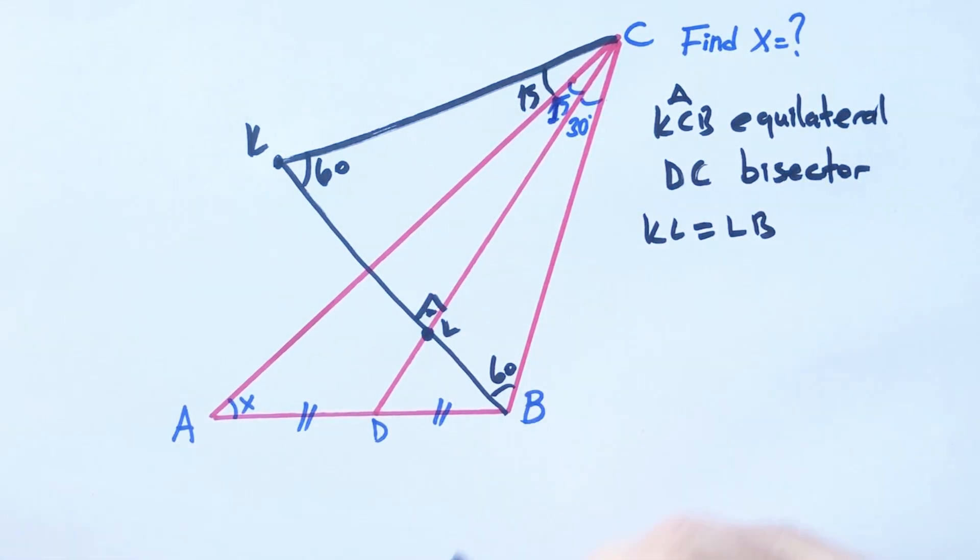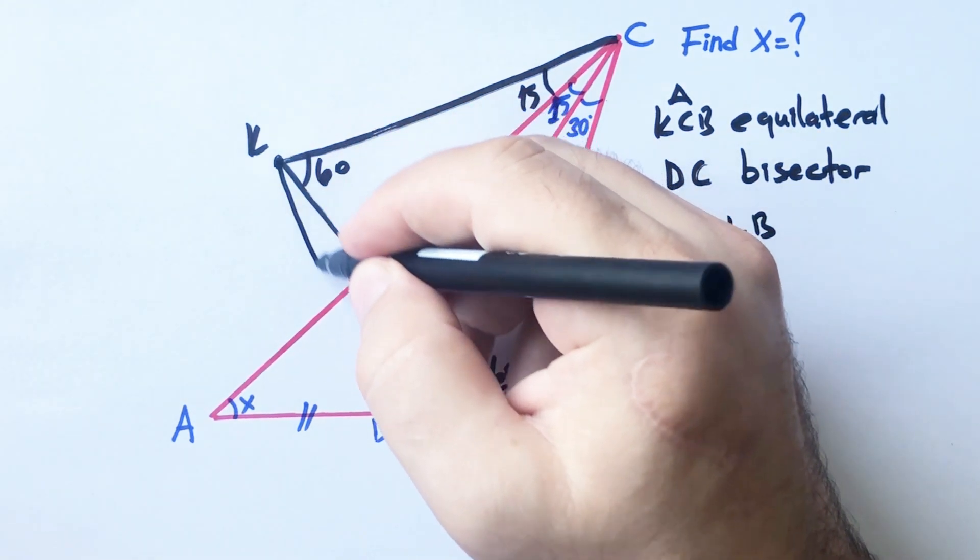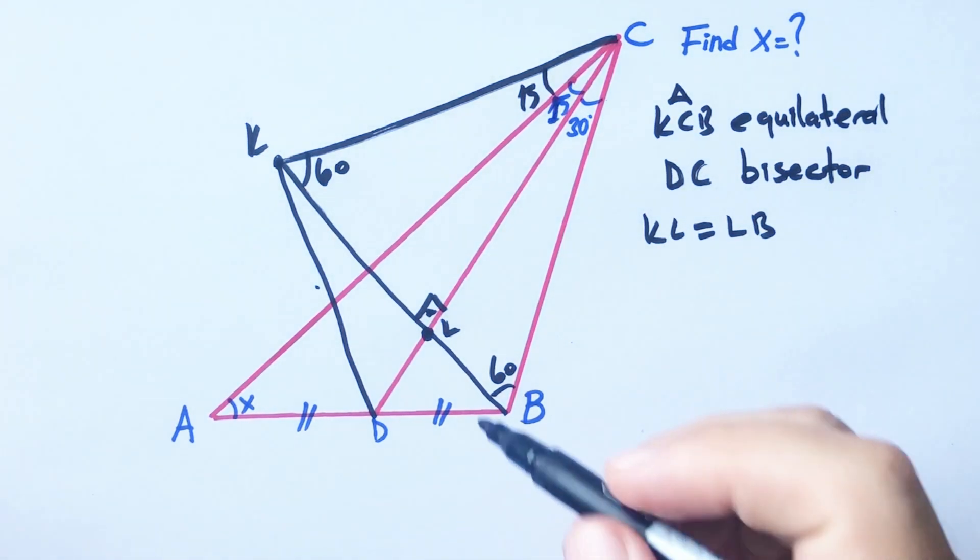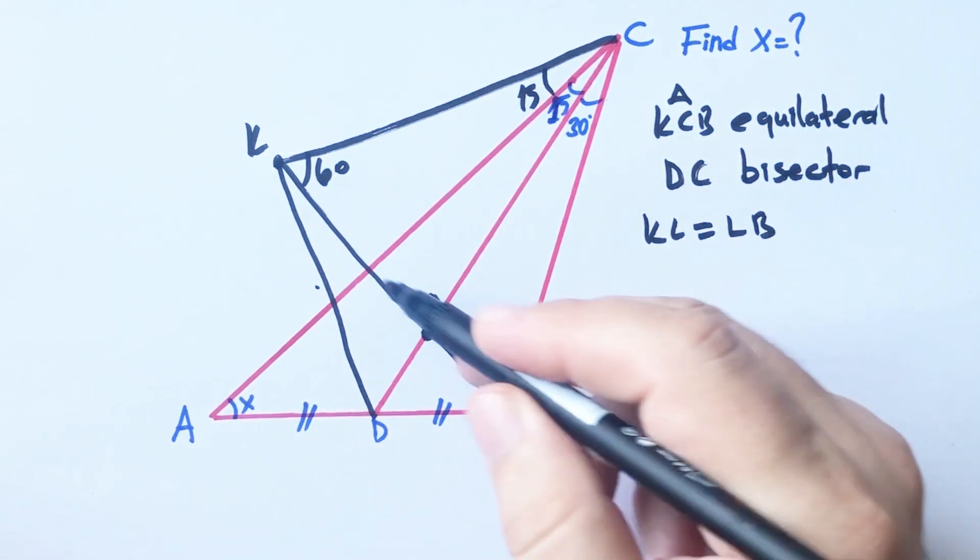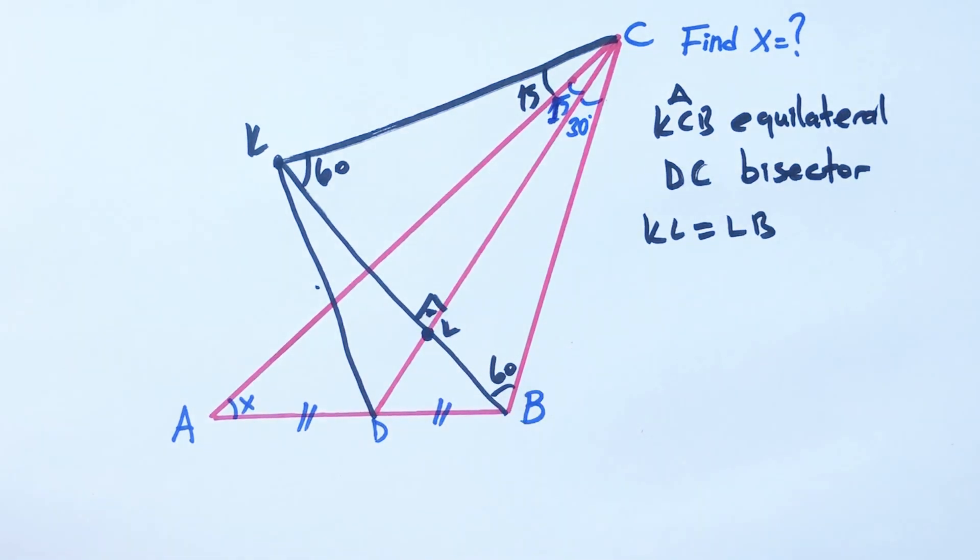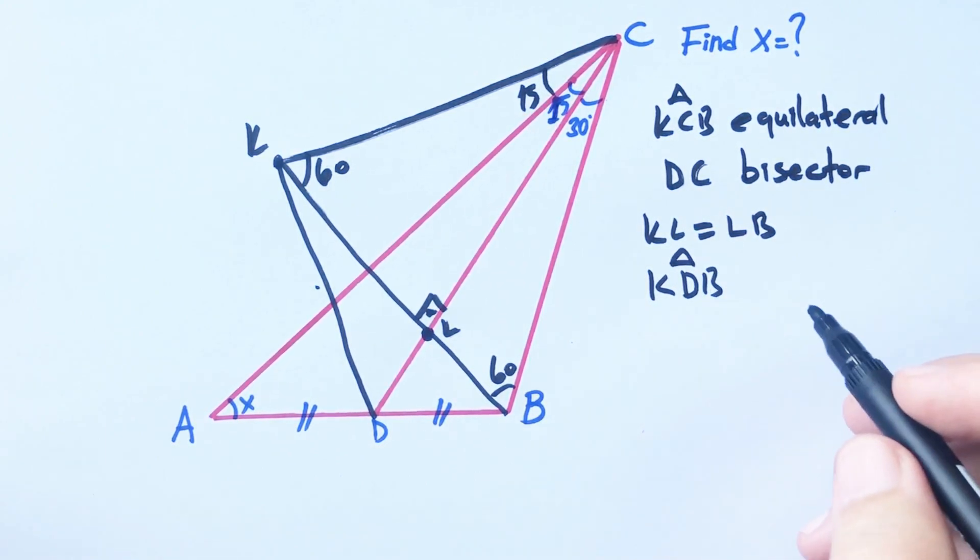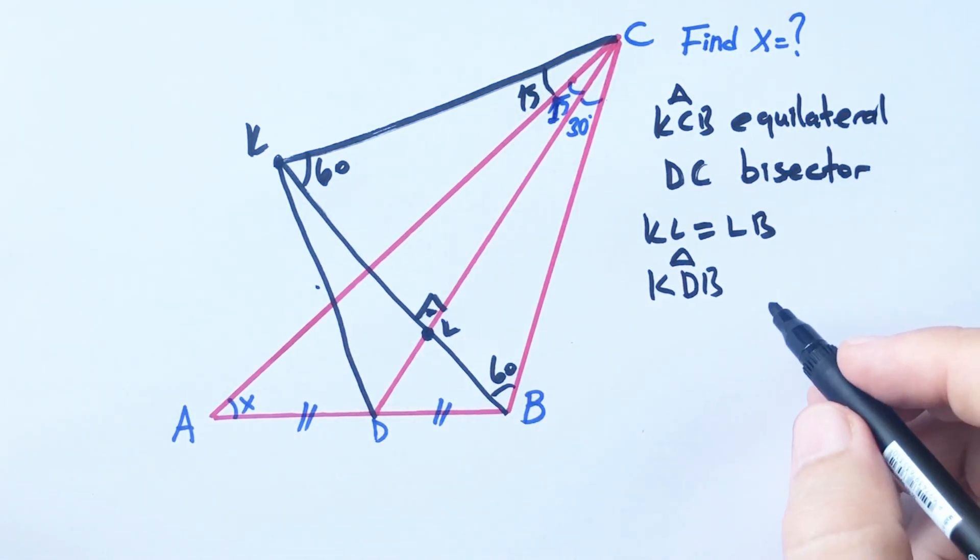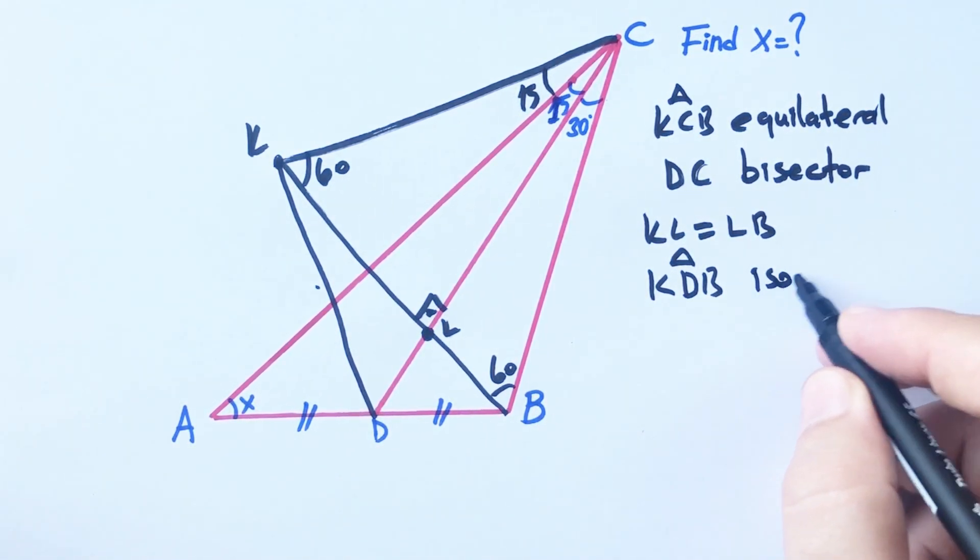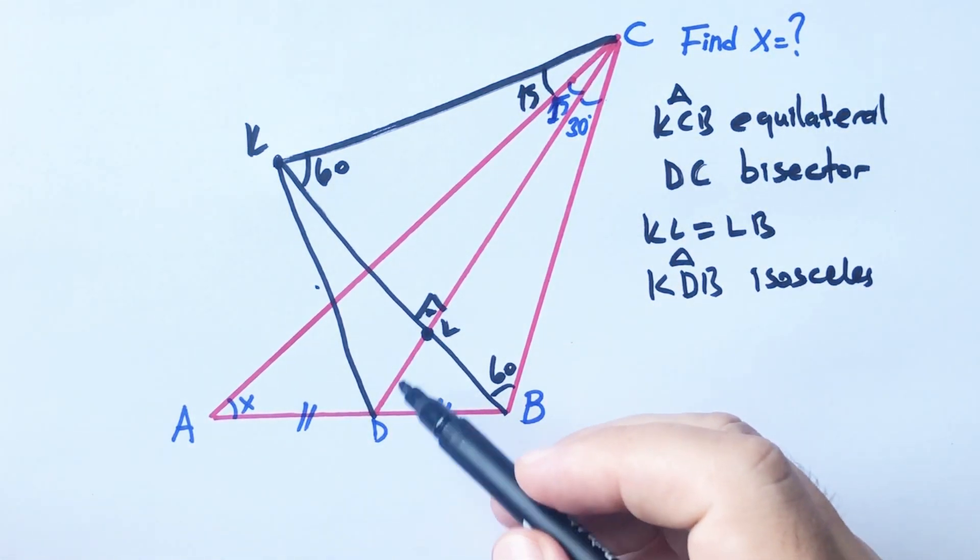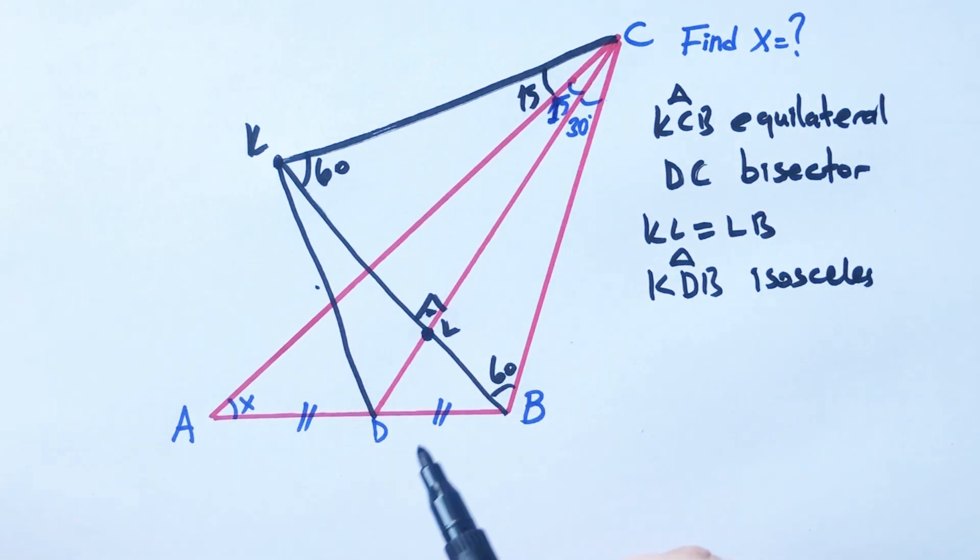These are 60 degrees because of the equilateral triangle. Let's connect K and D. We know that KL equals LB, which means triangle KDB is an isosceles triangle. We know that KD must equal DB.